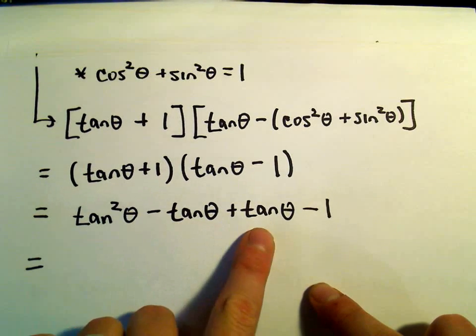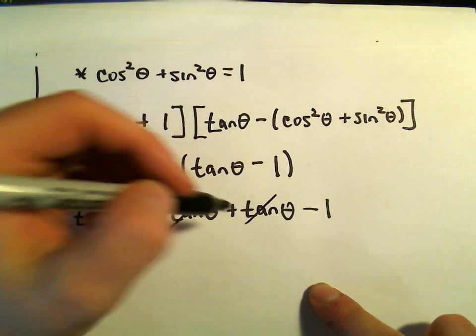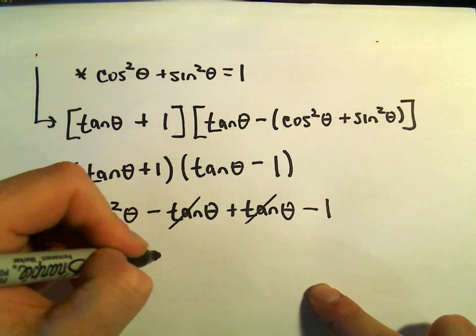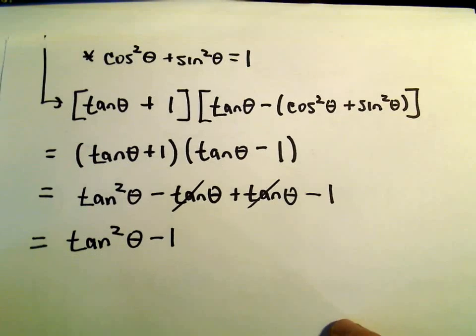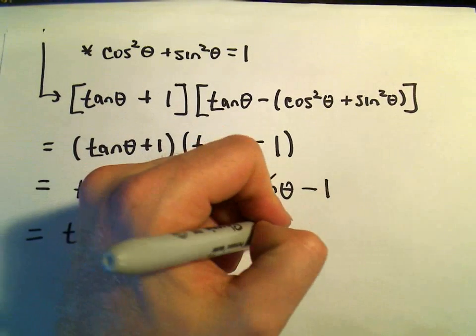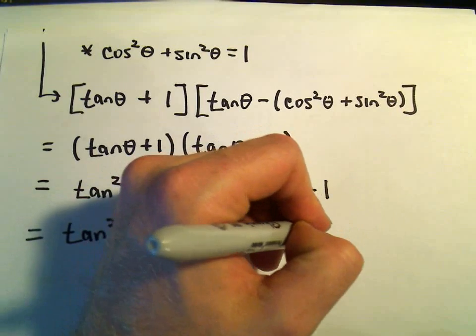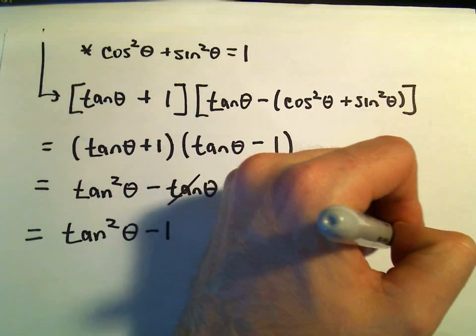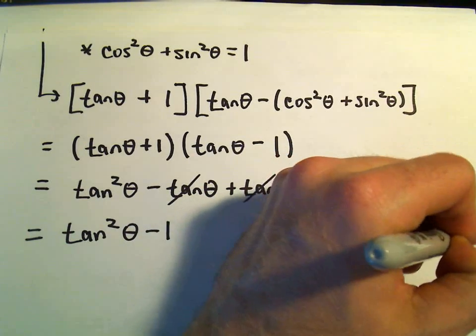Well, the negative tangent theta and the positive tangent theta are just going to cancel out. We're left with tangent squared theta minus 1. And again, now I think about this identity that relates tangent, that involves tangent squared. So there's one at least that says tangent squared of theta plus 1 equals secant squared theta.